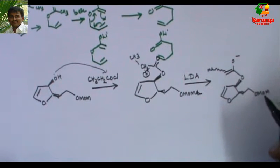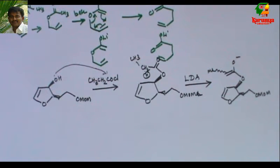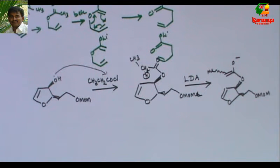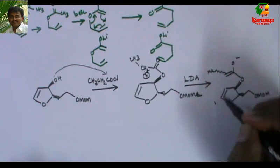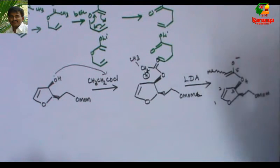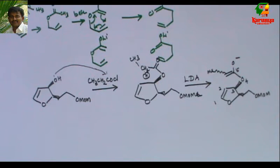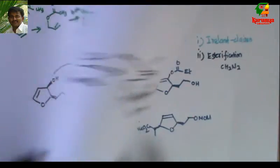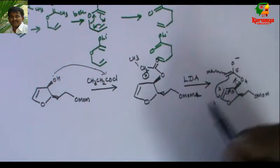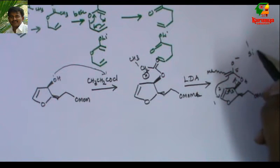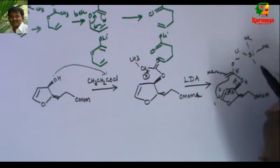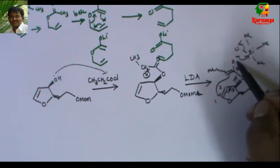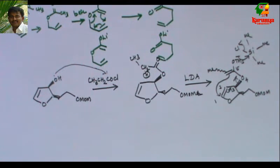MOM is methoxymethyl — a protecting group for alcohol that can be cleaved under acidic conditions. Now you can see a 1,5-diene here, which is the basic requirement for all 3,3-sigmatropic rearrangements. This can undergo Ireland-Claisen rearrangement. They have added TMS chloride, so the O-minus attacks TMS chloride to give O-TMS. If this O-TMS enolate undergoes rearrangement, what will be the product?